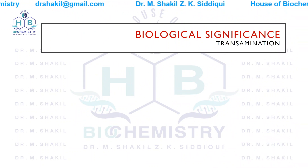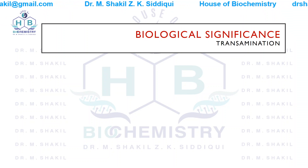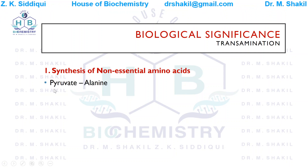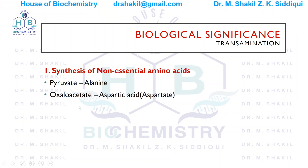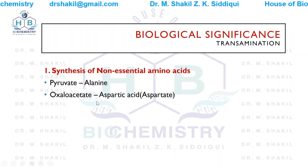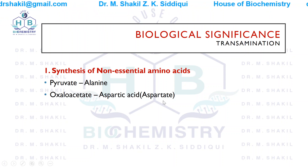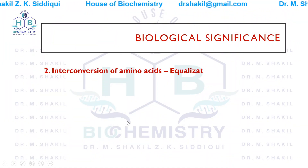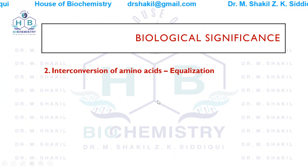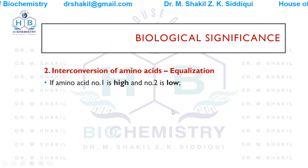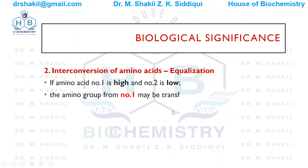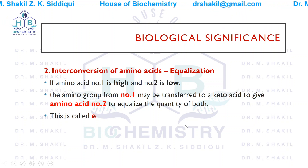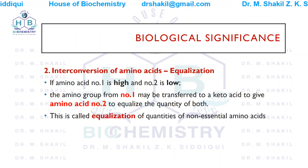The significance of transamination: it is used for the synthesis of non-essential amino acids — for example, pyruvate is converted to alanine, oxaloacetate forms aspartate (aspartic acid), and alpha-ketoglutarate can form glutamate (glutamic acid). Another significance is the inter-conversion of amino acids, known as equalization. If one amino acid is high and another is low, the amino group is transferred to equalize the quantities of non-essential amino acids in the body.